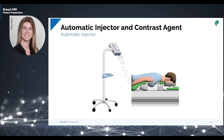An automatic injector ensures the accuracy of the dynamic scan through a selected flow rate of 1 to 2 milliliters of contrast per second, depending on the dynamic scan time used in the imaging protocol of the facility. The amount of contrast media used is 0.1 milliliters per kilogram with a 20 mL normal saline flush.